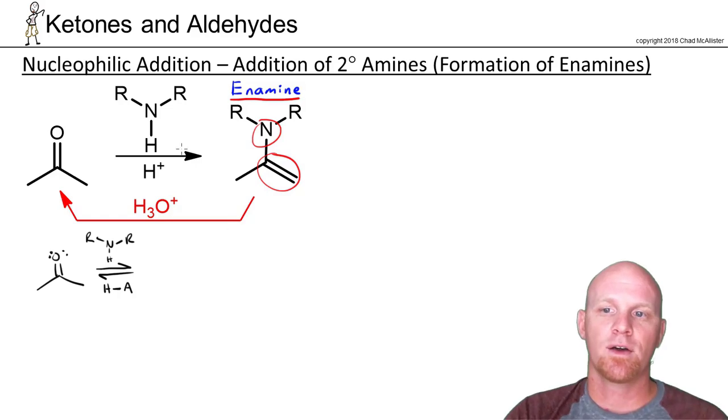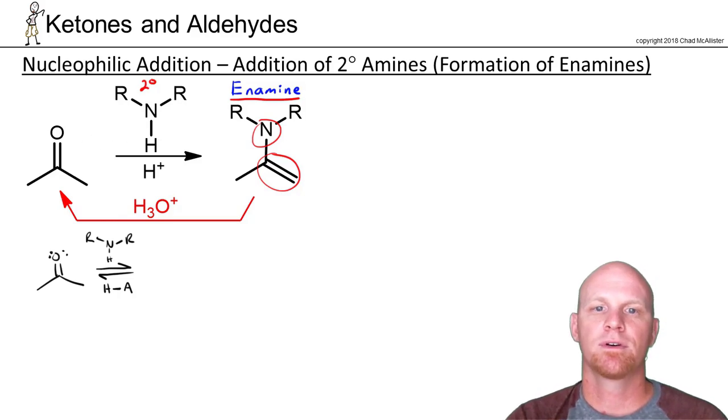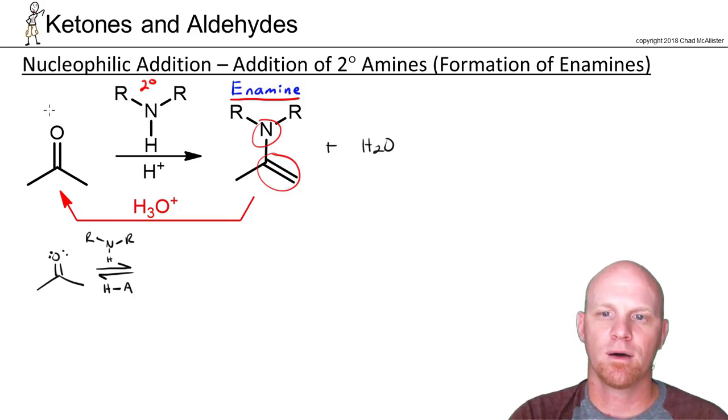In this case we get that by starting with a secondary amine instead of a primary amine. And the big difference here is that when we form water in the final product, I know where the oxygen comes from—it comes from the ketone.